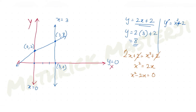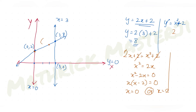Factoring x(x minus 2) equals 0 gives x equals 0 or x equals 2. At x equals 2, y equals 2 squared plus 2 equals 6, so the intersection point is (2, 6). The parabola passes through (0, 2) and (2, 6) and curves upward.